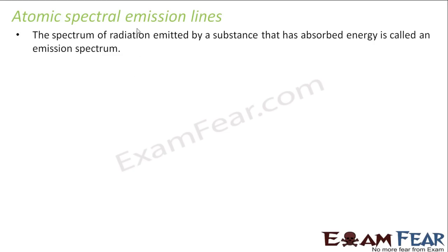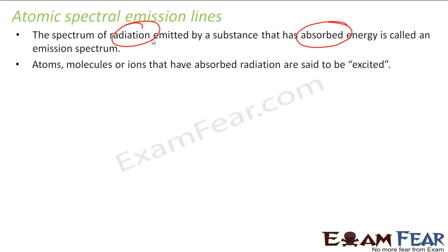The spectrum of radiation emitted by a substance that has absorbed energy is called the emission spectrum. Any substance which absorbs energy emits a spectrum. The atoms, molecules, or ions that have absorbed the radiations are said to be excited. If they are excited, they will emit some spectral lines and then again become stable.